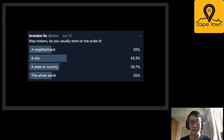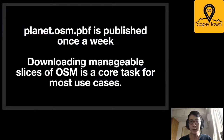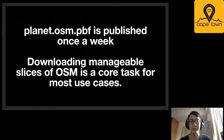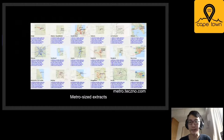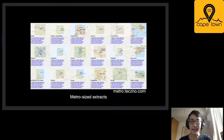That brings us to a fundamental task within using OSM, which is to download a manageable slice of OSM, because OSM is a planet file that's updated once a week. So inevitably, in order to use OSM, you have to go to a download site. Here's one example that was running for many years called Metro Extracts — it had about 200 or 300 different cities that were sliced once a week in two different formats.